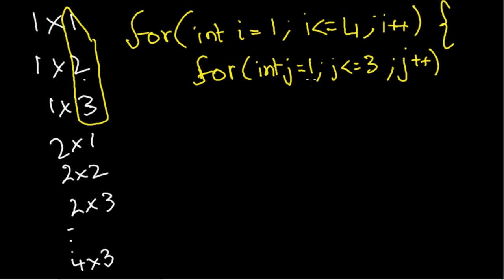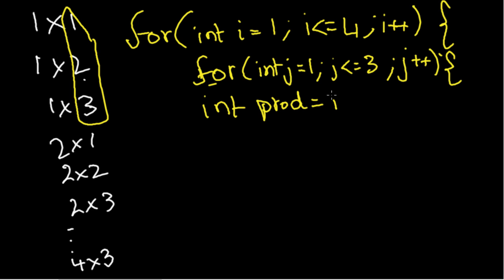This is essentially what we're doing — j goes from 1 to 3 and i goes from 1 to 4. Inside the j loop we declare: int prod = i * j. Then we have System.out.println, and mind you we're still inside this j loop because it's still open.